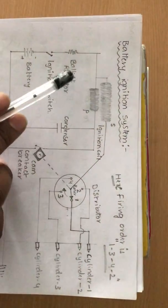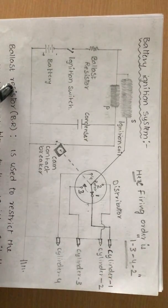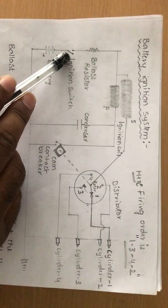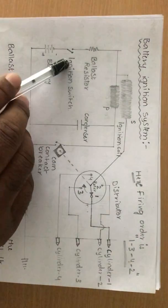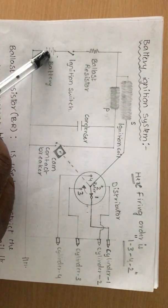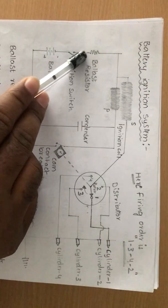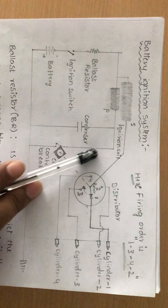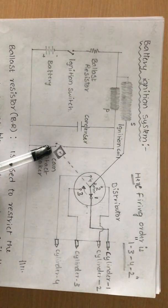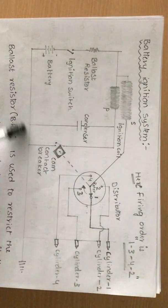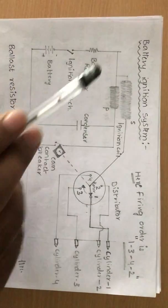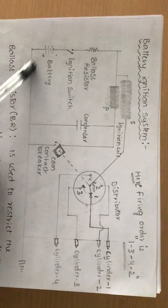Now let us think about the working of the battery ignition system. Whenever we turn on the ignition switch, current starts to flow from the ignition switch, then through the ballast resistor, then the primary coil. If the contact breaker is closed, the primary circuit is closed and current flows through it.